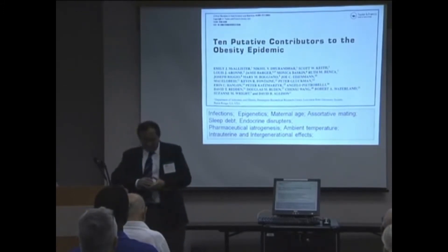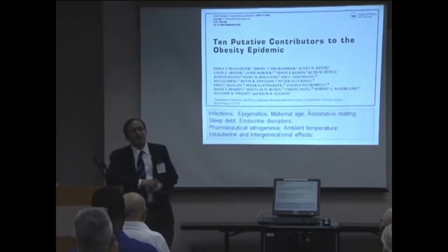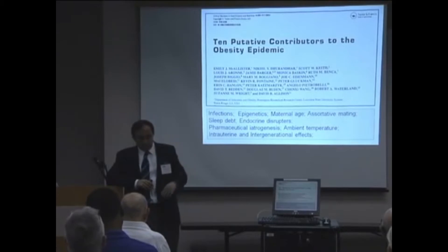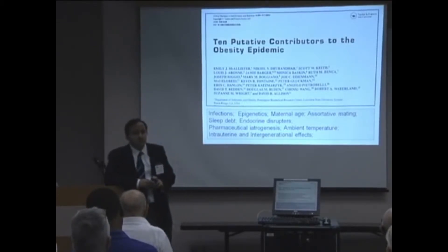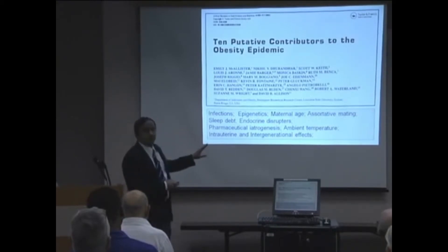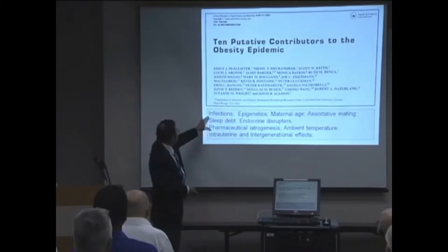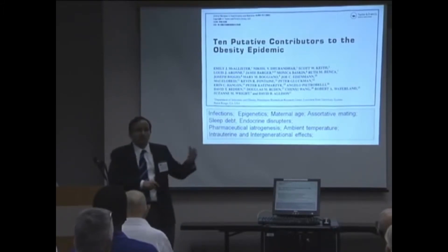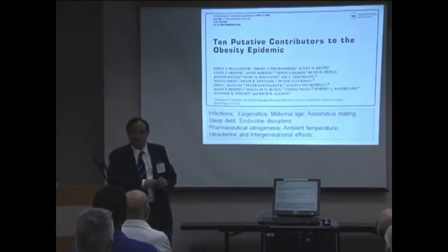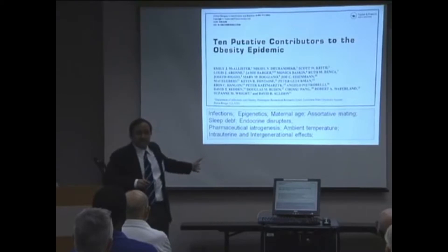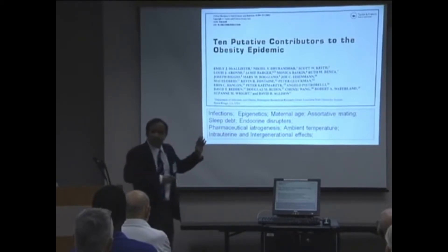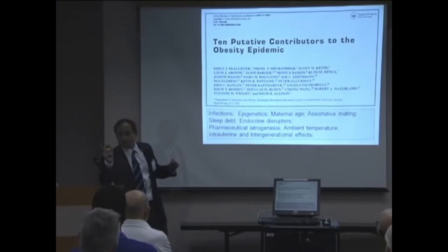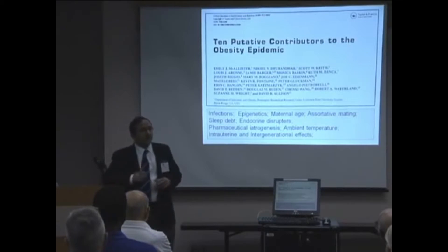There is a website that lists all the contributors to obesity identified so far. The number is 84 — 84 various contributors. But there are ten serious contenders, so to say, as putative contributors to obesity. Some of them include infections: certain viruses and other pathogens have been shown to cause obesity in animal models and are associated with human obesity. My lab works in this area — we work with certain viruses where the viral infection causes obesity. That is also an example of how obesity is not a choice.